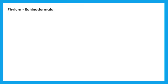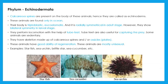Let us study the characters of phylum Echinodermata. The body of these animals is covered with spines made up of calcium carbonate. These are multicellular, triploblastic, eucoelomate animals found only in the ocean. They are provided with tube feet for locomotion and for capturing prey. These are unisexual and have a good ability of regeneration. Examples include starfish and sea cucumber.